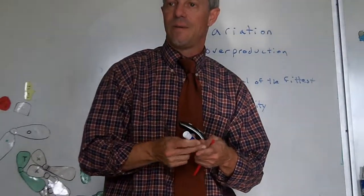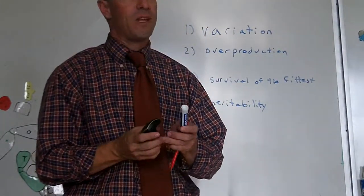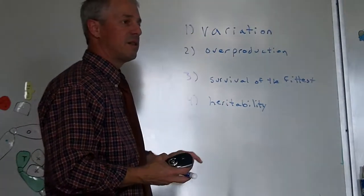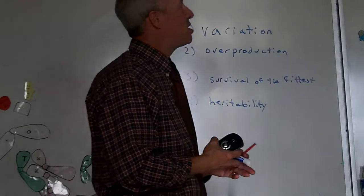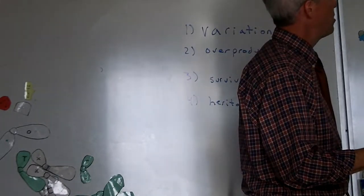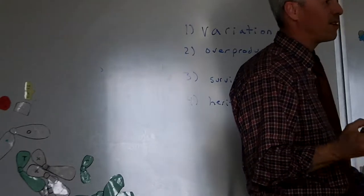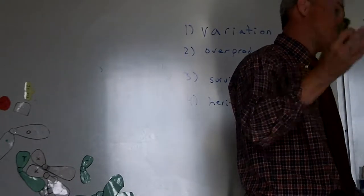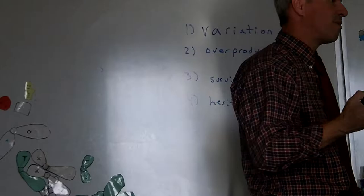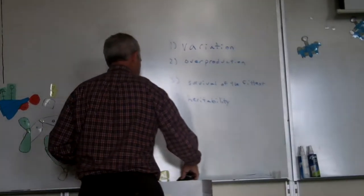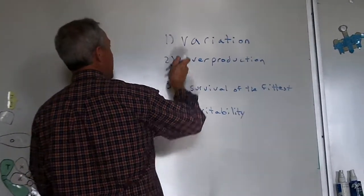So, number four is heritability. The idea that the kids look like the parents. That's heritability. For the test on Friday, if you give this essay, you've got to write about these four things. Variation just means that there's a whole bunch of different possibilities in a population. Some light, some dark, some medium. Some tall, some short. Some dark hair, some light hair. There's variation.